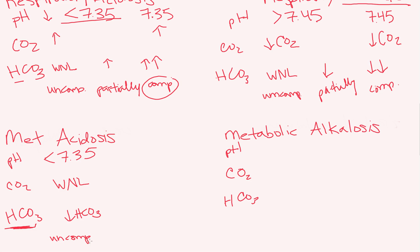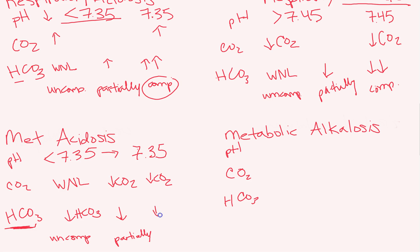Pretty soon your body says it really doesn't like this acidosis and tells your lungs to help compensate. CO2 is an acid, so if we already have acidosis, we're going to decrease our CO2 to compensate — starting to hyperventilate and blow off CO2. This is partially compensated metabolic acidosis: pH is still low, maybe a little better, bicarb is still low as the problem, but CO2 is starting to compensate. Minutes to hours go by and the low CO2 from hyperventilating brings pH back into barely normal limits — still on the acidic side of normal, but normal. That's fully compensated metabolic acidosis.